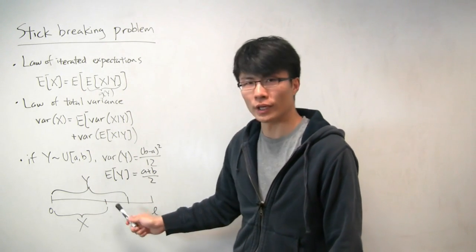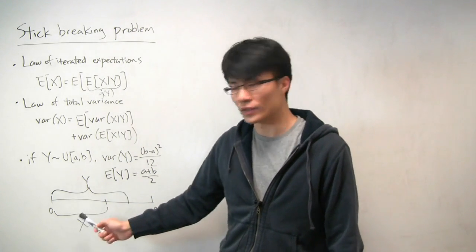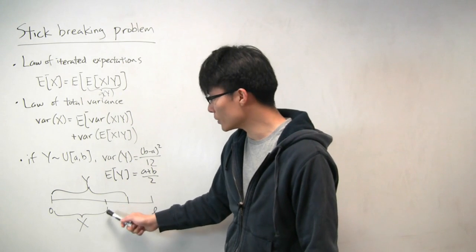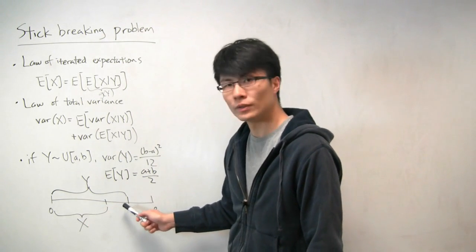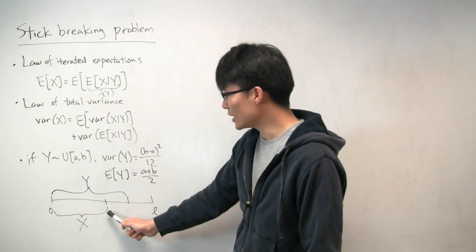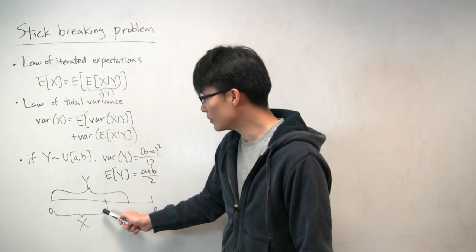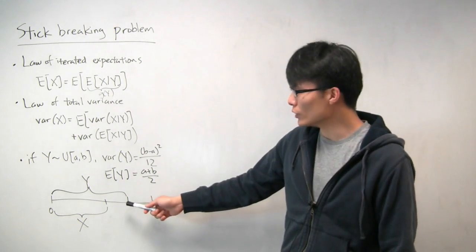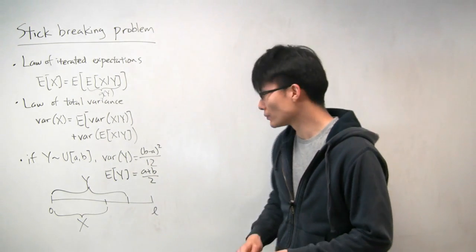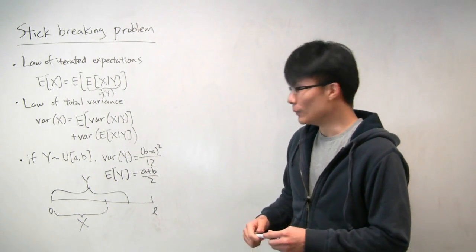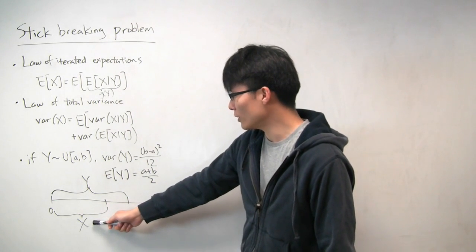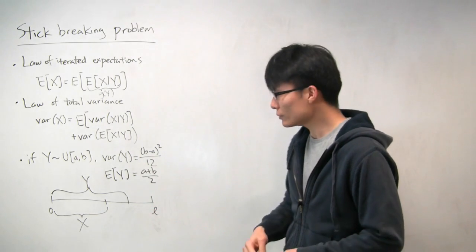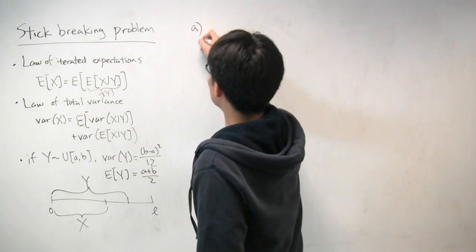Then we repeat this process. We take the left side of the stick that remains, pick another point uniformly at random along this left remaining side, break it again, and keep the left side of that break. We call the length of this final remaining piece x, which is again random. The problem is asking us to calculate the expectation and variance of x. At first this seems difficult, because the expectation and variance of x depends on where you break it the second time and also where you break it the first time. So let's see if conditioning can help us here.